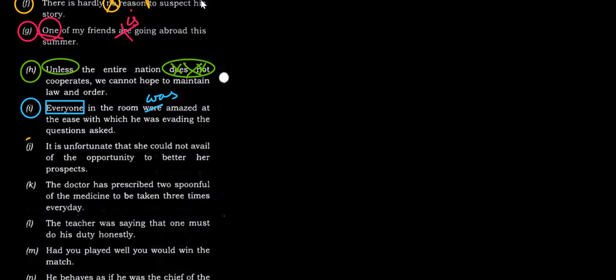Next one: It is unfortunate that she could not avail off the opportunity to better her prospects. Off cannot come after avail. So it would be just avail the opportunity. It is unfortunate that she could not avail the opportunity to better her prospects.